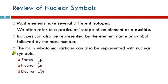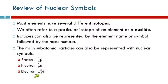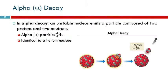We can also represent the main subatomic particles with nuclear symbols. Atoms contain protons, neutrons, and electrons. A proton has the symbol P, with atomic number 1 and mass number 1. A neutron has the symbol N, with atomic number 0 and mass number 1. An electron has the symbol E, with mass number 0 and atomic number negative 1 — we'll see how that works.